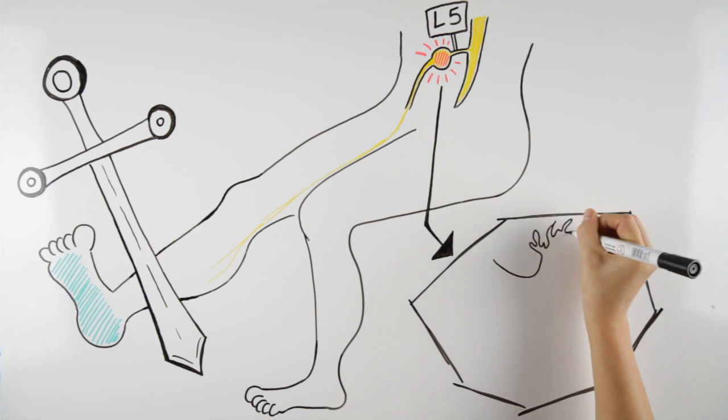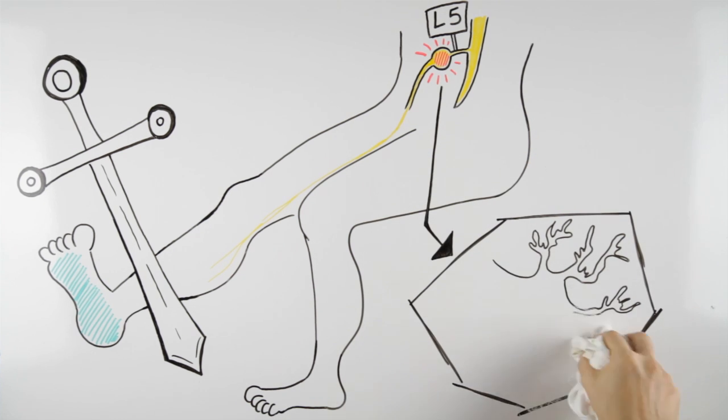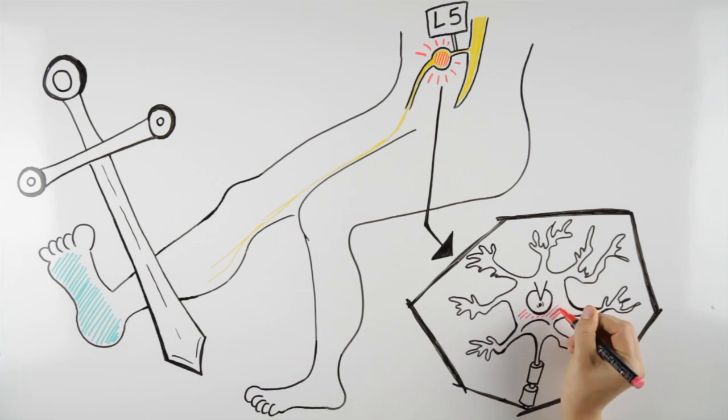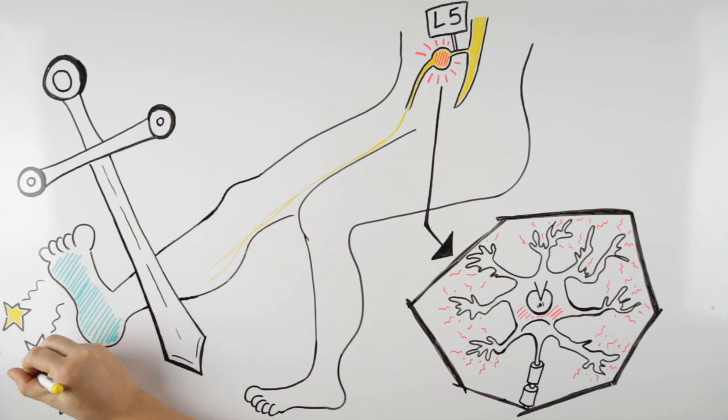This means that all neurons in the dorsal root ganglion L5 will lower their firing threshold, meaning that they become hyperexcitable. If that happens in nociceptors, and the brain interprets it as relevant, this may result in a pain experience.